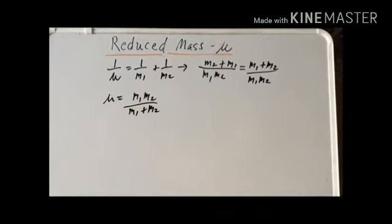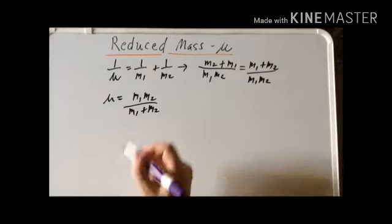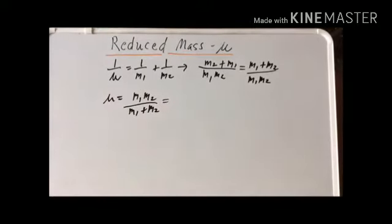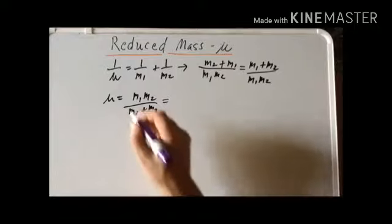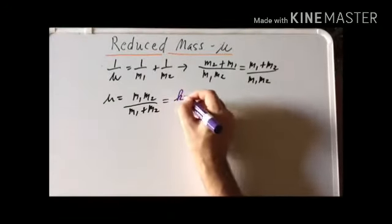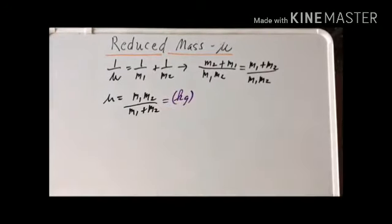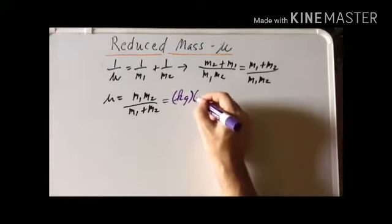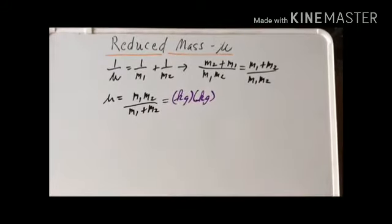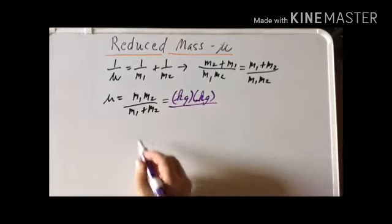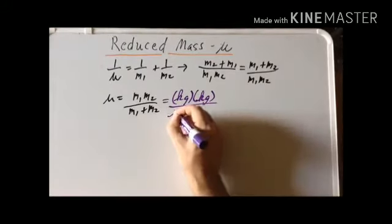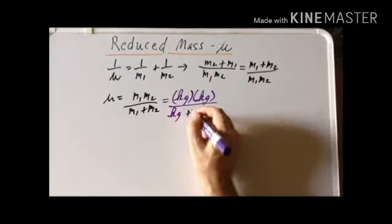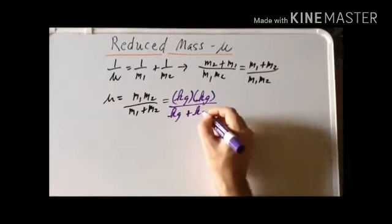What is a useful thing to do at this stage is to show that the units of the reduced mass are what we'd expect them to be. So for example, let's assume that we're going to write the masses in terms of the SI unit, the kilogram. So M1 is going to have units of kilograms, M2 is going to have units of kilograms. So we have kilograms times kilograms in the numerator. Then in the denominator, we have kilograms plus kilograms, because M1 and M2 are each in units of kilograms.